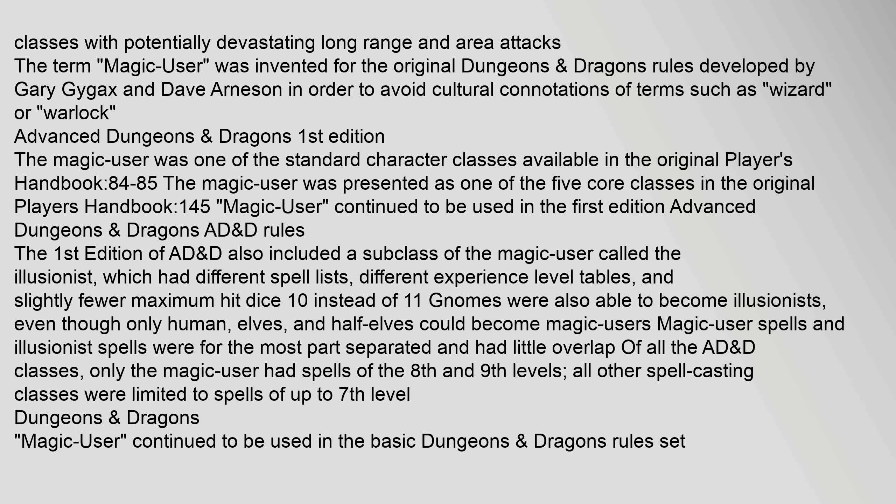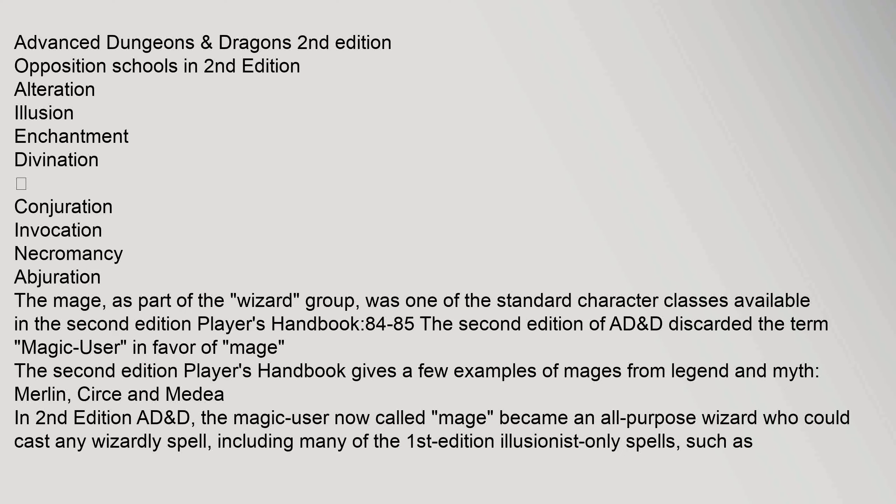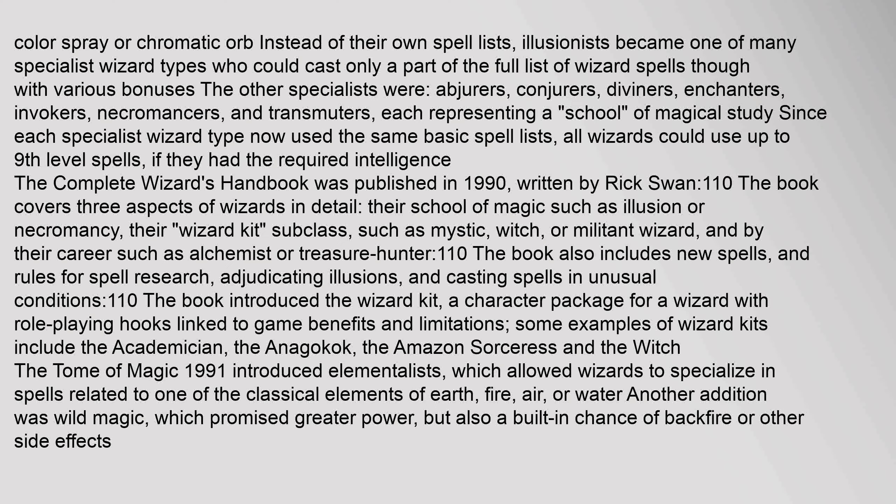Wizards are classes with potentially devastating long-range and area attacks. The term 'magic user' was invented for the original Dungeons & Dragons. In Advanced Dungeons & Dragons, illusionists had spells such as color spray or chromatic orb instead of their own spell lists. Illusionists became one of many specialist wizard types who could cast only a part of the full list of wizard spells, though with various bonuses.